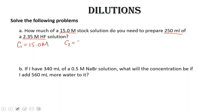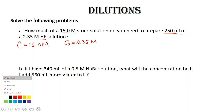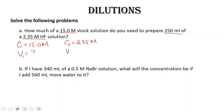C2 is going to be that 2.35 molar. We're only given one volume. It says how much do you need to prepare 250 milliliters of a 2.35 molar solution, so that 250 milliliters is going to be our V2. We don't know what V1 is, but we do know what V2 is — 250 milliliters. It says how much of this stock solution, so we don't know how much is in our concentrated solution. So C1V1 is equal to C2V2, and we are solving for V1.